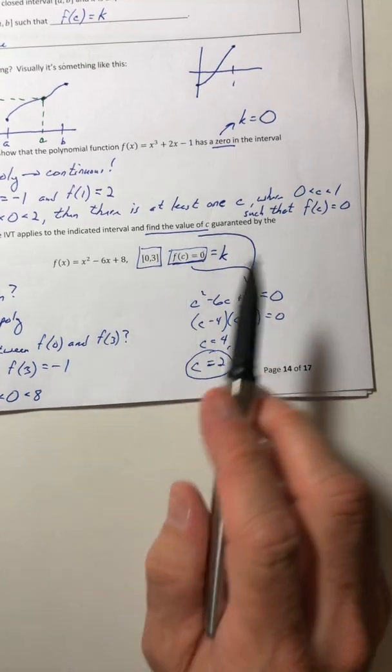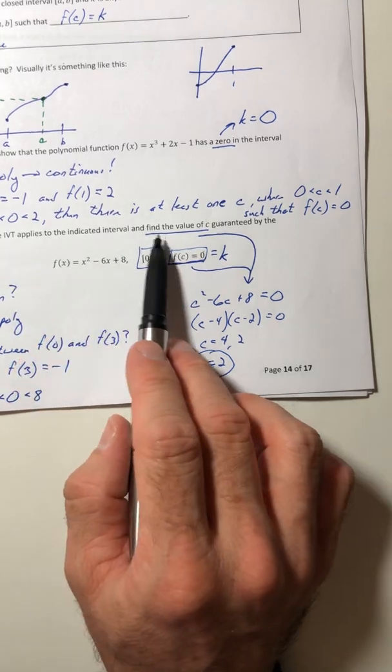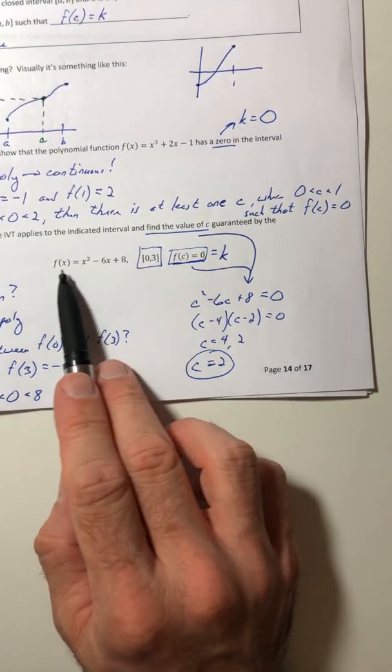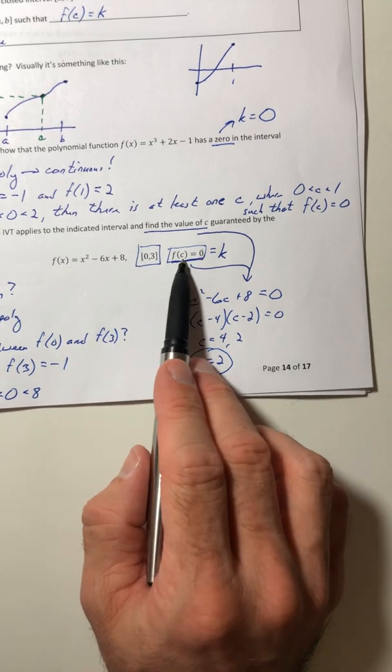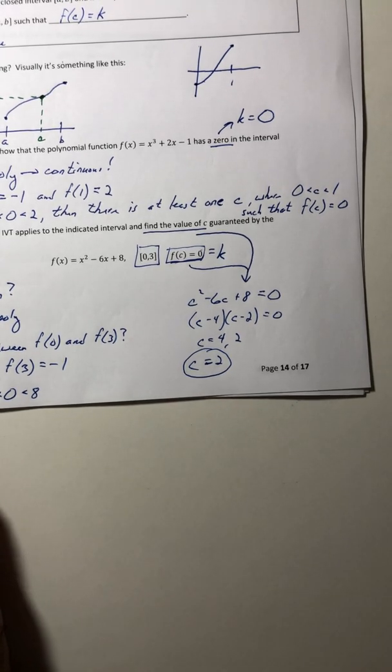And in case you're wondering, because I didn't say it before, for a problem like this, when you got to verify that the theorem applies and then find the value of c, they have to give you these three things. They have to give you the function, the interval, and the k value itself. Okay, let's go ahead and stop the video here. And then we'll do one more on some tricky type problems.